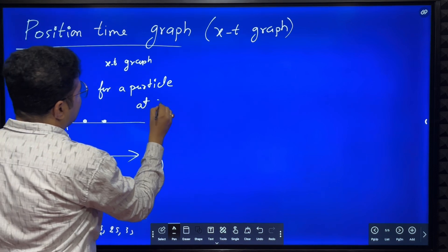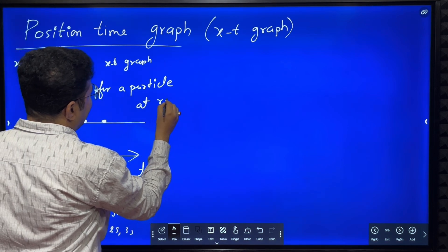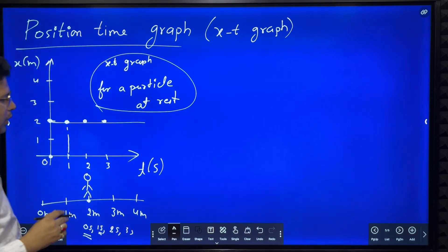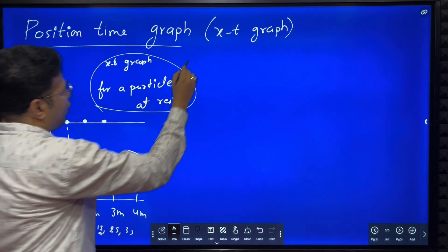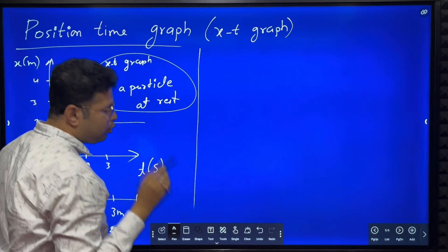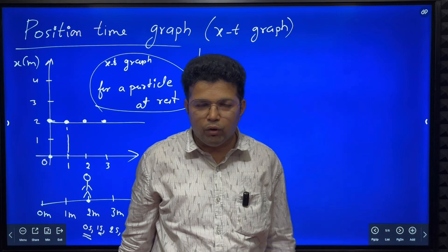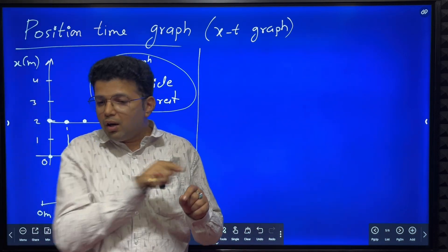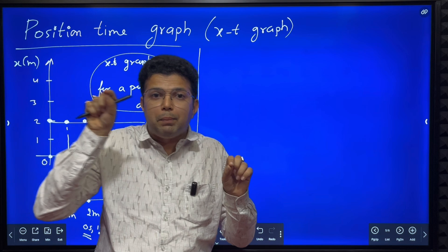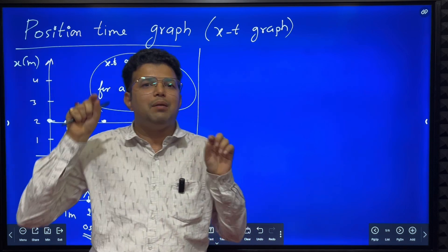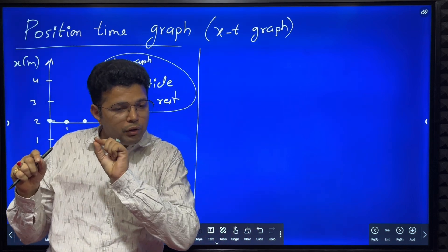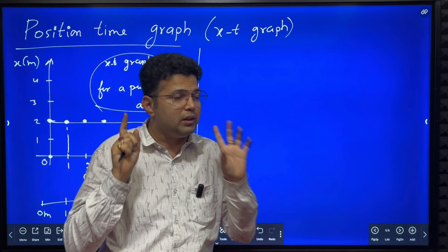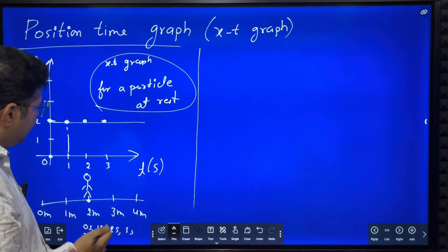What you should remember: if asked to draw a position-time graph for a particle at rest, the line you draw should be parallel to the time axis, meaning that even though time is changing, the position is not changing.